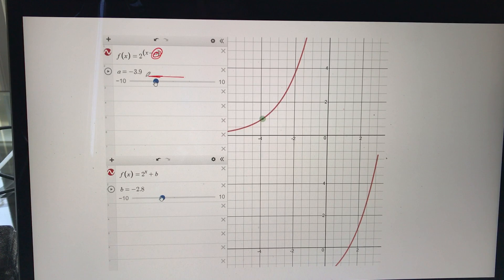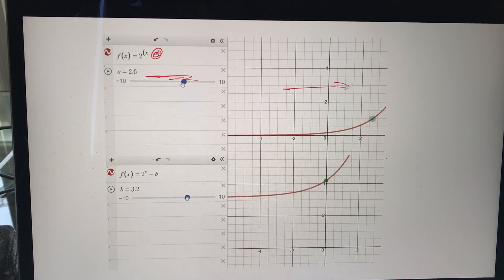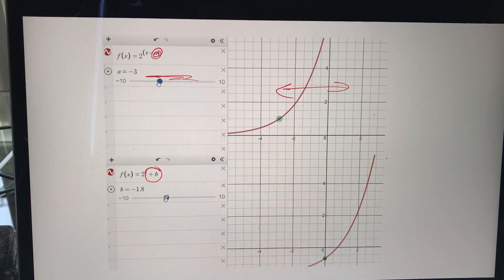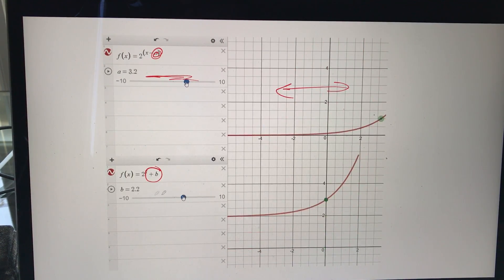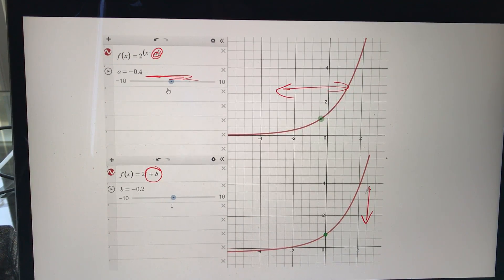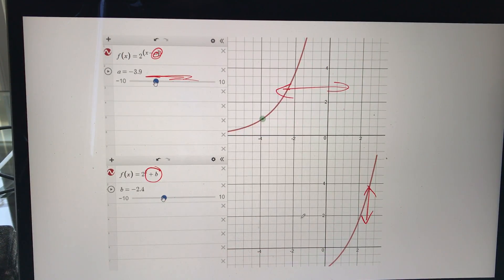As you move this slider left and right, the function moves left and right on the grid. And this one here, the b, this is on the outside. So as the b moves, essentially positive and negative, the function itself goes up and down, as we can see.